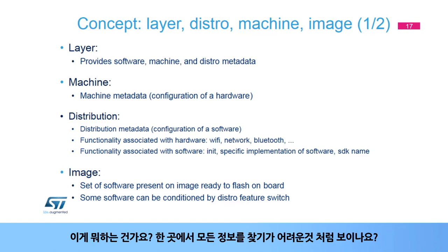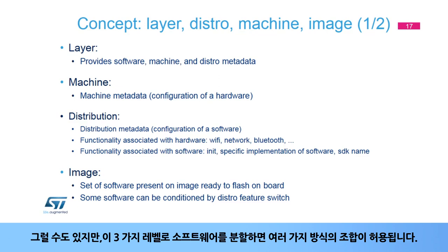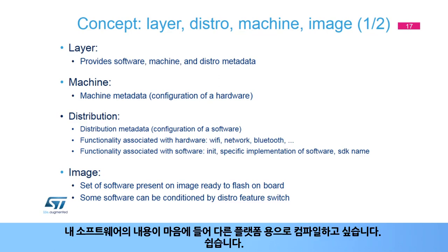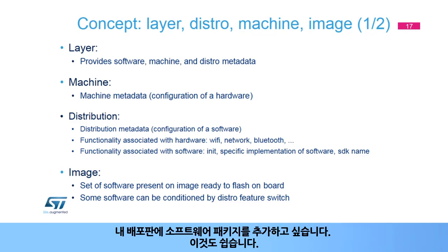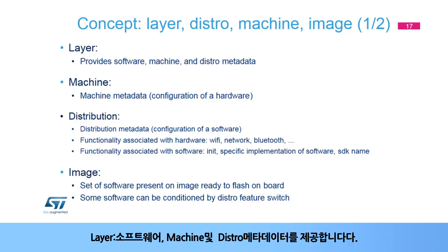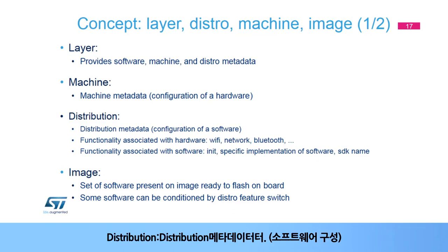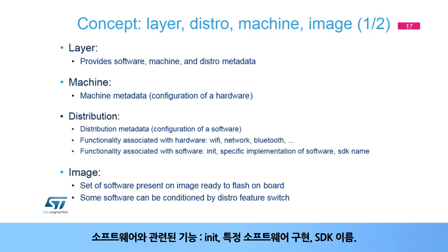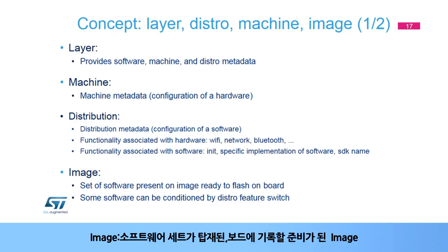Splitting the software into these three levels allows their combination in many ways: changing the target platform, adding a software package to a distribution, or configuring software differently — all become easy. A layer provides software, machine, and distro metadata. A machine provides machine metadata and configuration of hardware — for example, functionality associated to hardware such as Wi-Fi, network, and Bluetooth. A distribution provides distribution metadata and configuration of software, including functionality associated to software such as init, specific implementation of software, and SDK name. An image defines the set of software present on the image ready to flash on the board, where some software can be conditioned by distro feature switches.